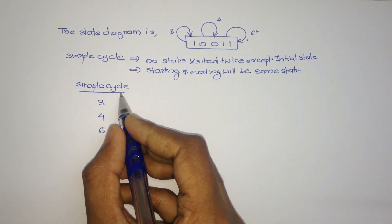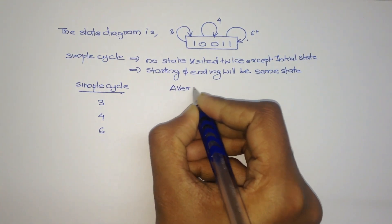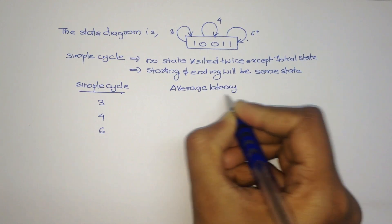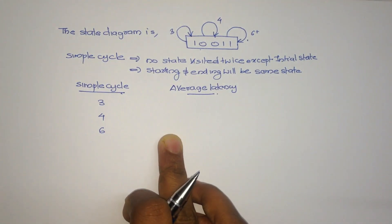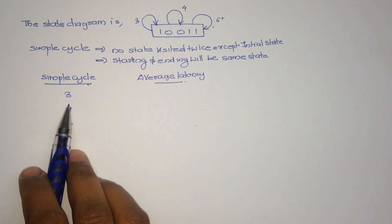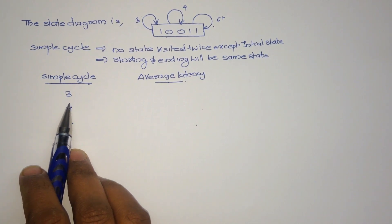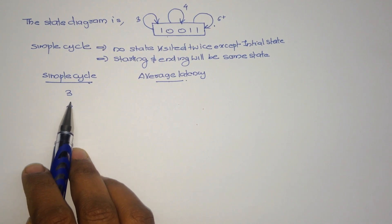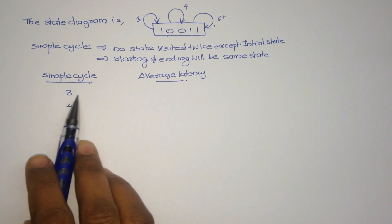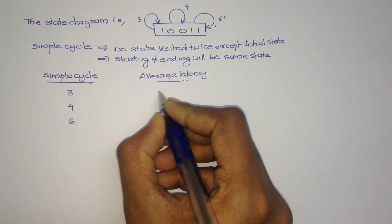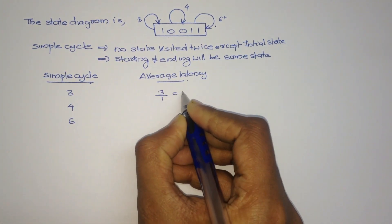After finding the symbol cycle, we have to find the average latency. This average latency is used for finding the greedy cycle. To find the average, consider how to find the average of two numbers — for example, 1 and 2: we add them and divide by 2, that is (1+2)/2. Here, we have to find the average of each number, but there is only one variable.